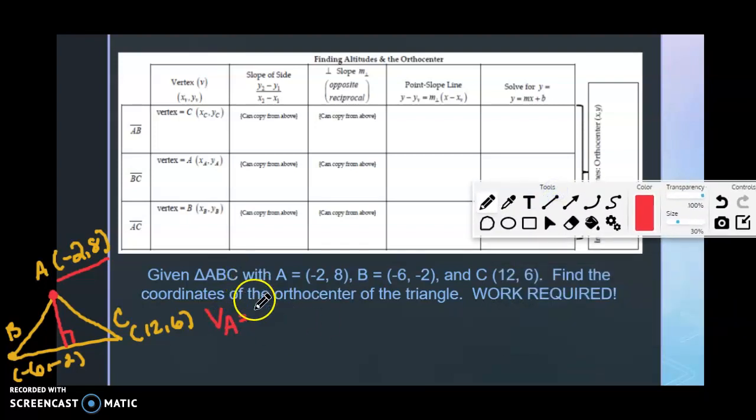So we know that we have the point of (-2, 8), so there's my point and then I need the slope of this, okay. Now how would I figure out the slope? Well first of all, if I find the slope of BC, the slope that goes through vertex A, since it's perpendicular, is the opposite reciprocal.